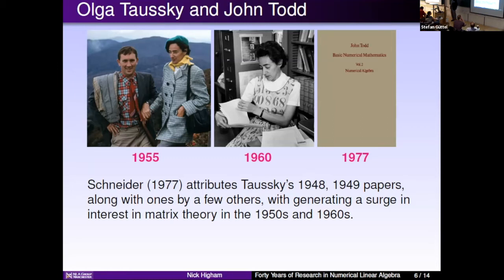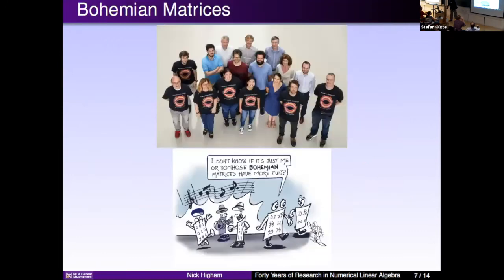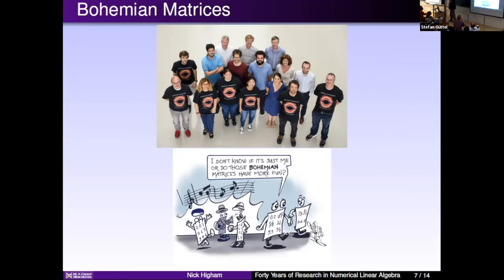One of the reasons I've been looking at her work again recently is something mentioned by Rob: the Bohemian matrix topic. Bohemian matrices — very roughly speaking — means matrices made up of small integers, and that coincides with a lot of what Taussky did. There was a 2008 workshop on Bohemian matrices with a t-shirt developed by Rob and colleagues featuring the particular Bohemian eigenvalue picture. The cartoonist is John de Pillis, who has done many cartoons for SIAM News going back to the 1980s.